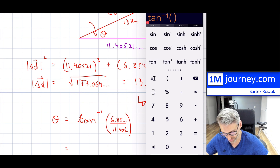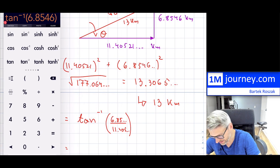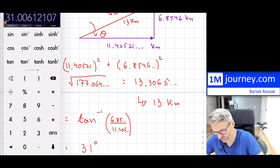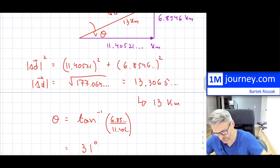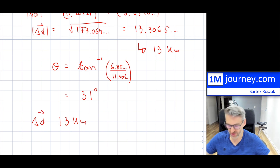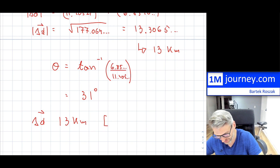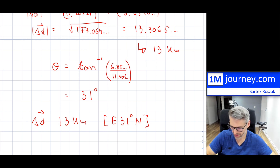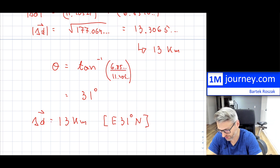So the total displacement is 13 kilometers at 31 degrees. Starting from east and going 31 degrees up toward north — or equivalently, east 31 degrees north. You can write it in whichever format is preferred, but that is the full reconstructed resultant vector.